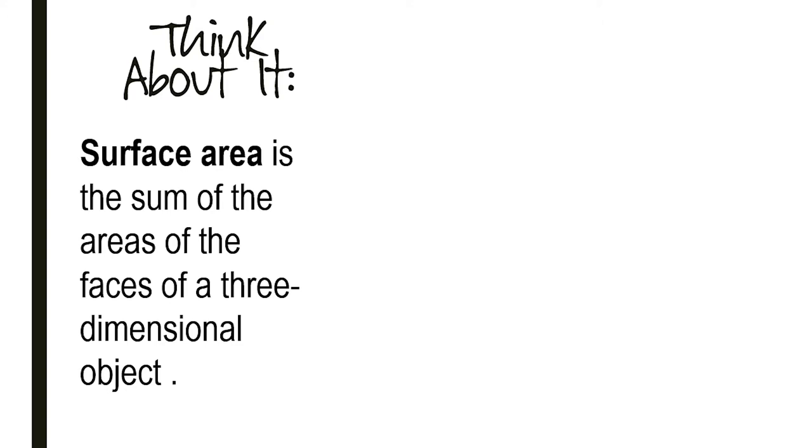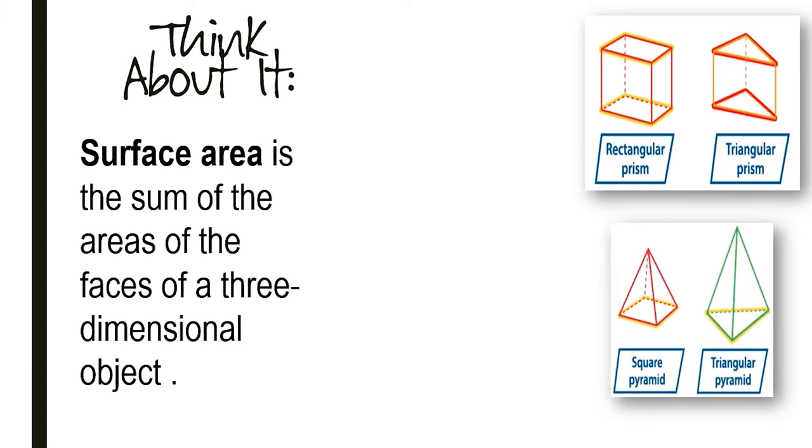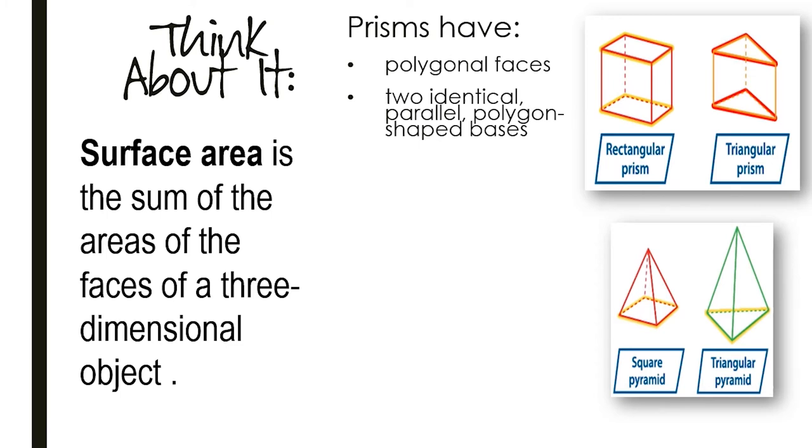Think back to the properties we learned last week for prisms and pyramids. Prisms have polygonal faces, two identical parallel polygon shaped bases, and they are named by the shape of their base.